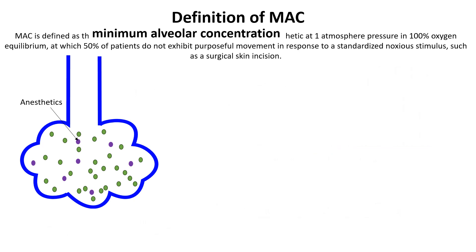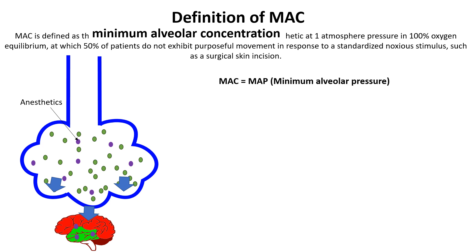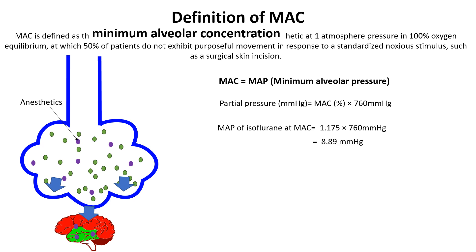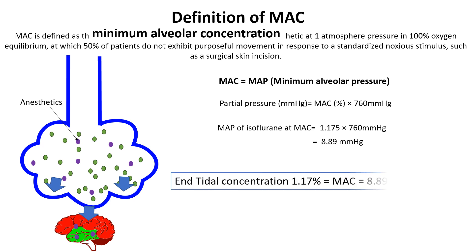We know that anesthetics in the alveoli exert partial pressure, which in turn mirrors the partial pressure of the anesthetic in the brain. So anesthetic potency can also be expressed as minimum alveolar pressure. The relationship between concentration and partial pressure is expressed by this formula. So the partial pressure in the alveoli as a result of isoflurane would be calculated as 8.89 mmHg at sea level. So at 1 MAC, the partial pressure generated by isoflurane should be 8.89 mmHg. This alveolar pressure is critical because anesthetics travel from the lungs, blood, and brain based on their partial pressure gradients, not their concentration. Thus, minimum alveolar concentration can be defined as the alveolar partial pressure of an inhaled anesthetic at which 50% of patients do not respond to a standard surgical stimulus. For isoflurane at MAC, it is 8.89 mmHg and remains constant.